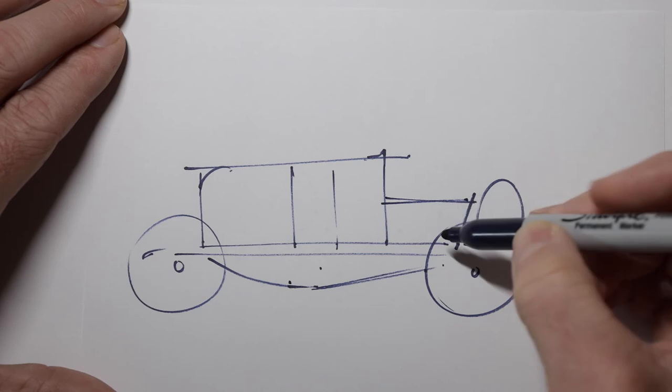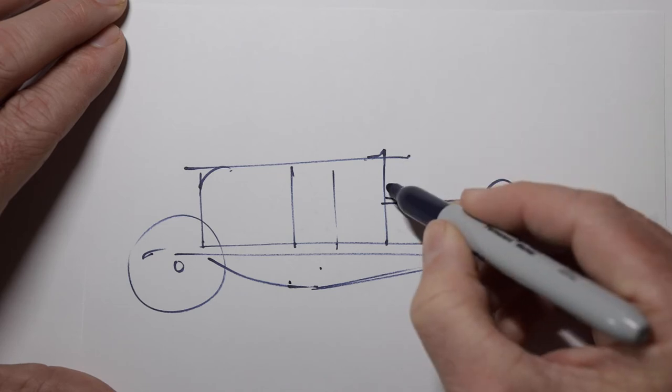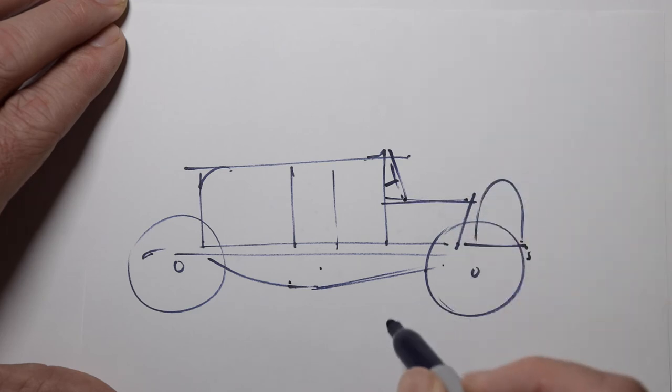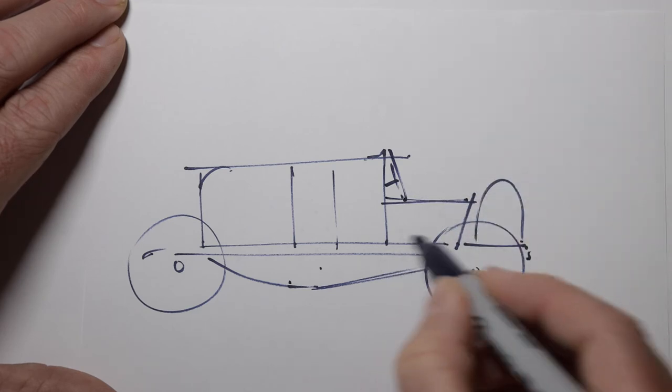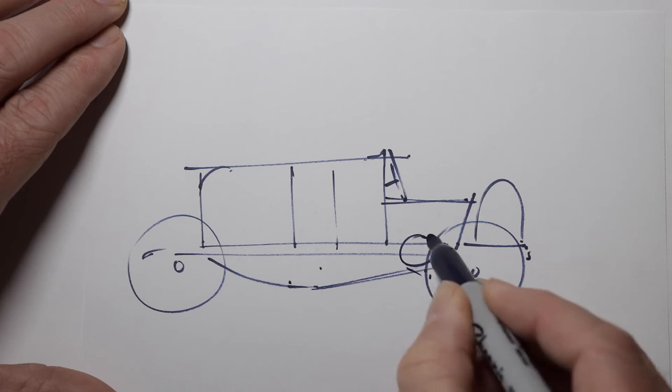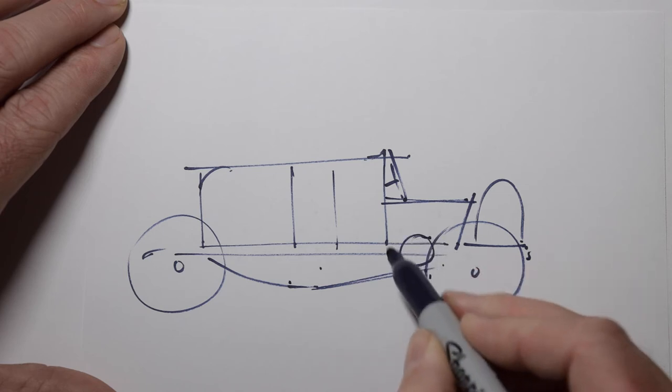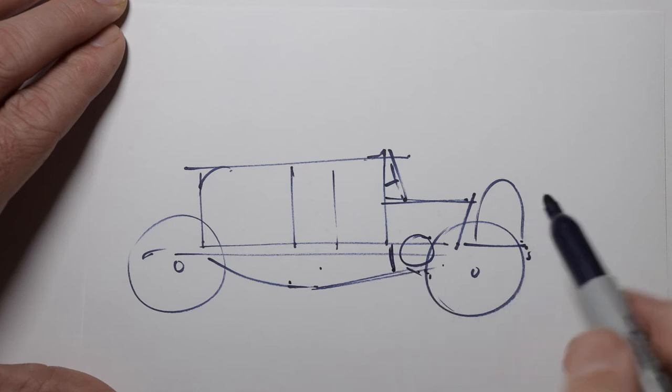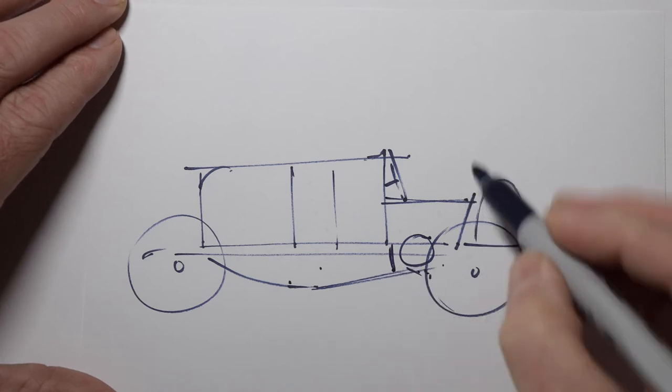So we can start putting in the details. So those would be things like the steering wheel and the chain drive, another wheel there, a little lever in front of that for the brakes I think, and the seats.